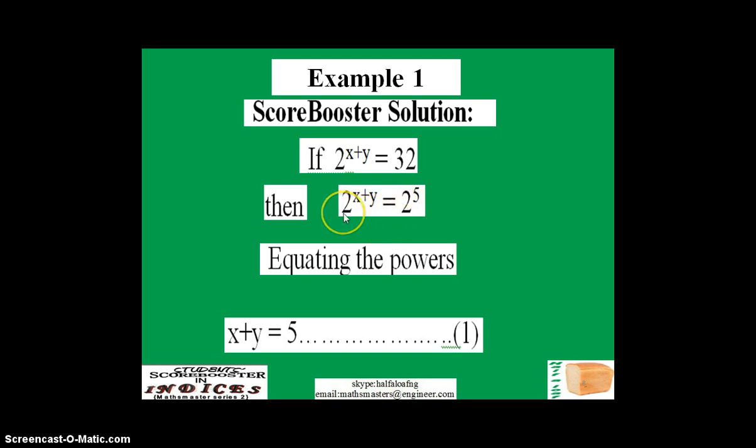Now that you have both bases being equal—we have 2 here and we have 2 here—we can equate the powers thus: x plus y equals 5. We're gonna take this as our first equation.